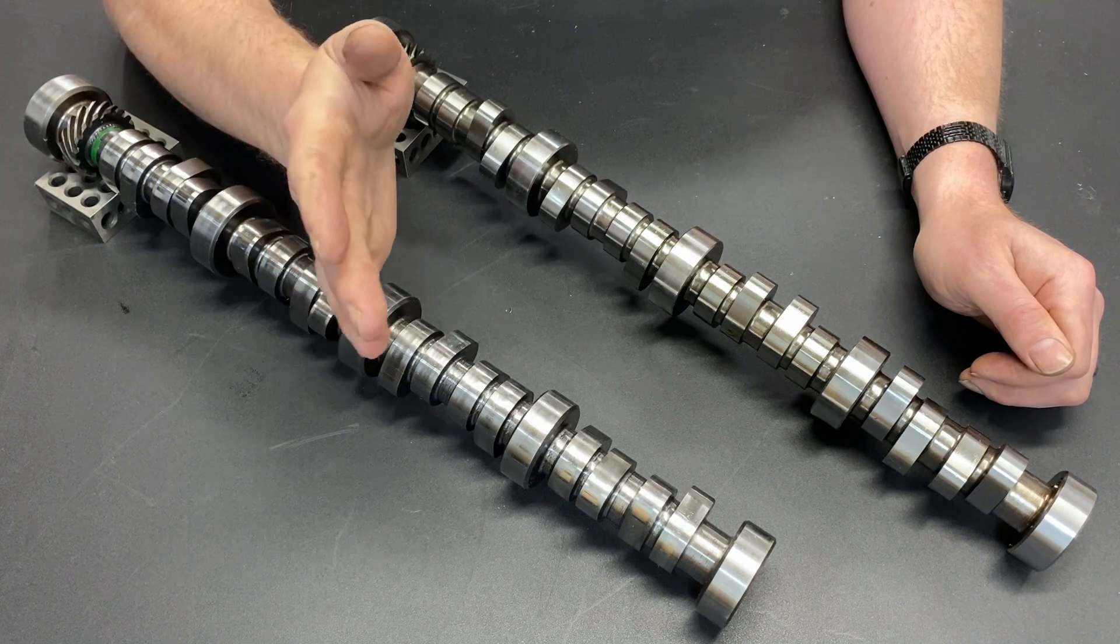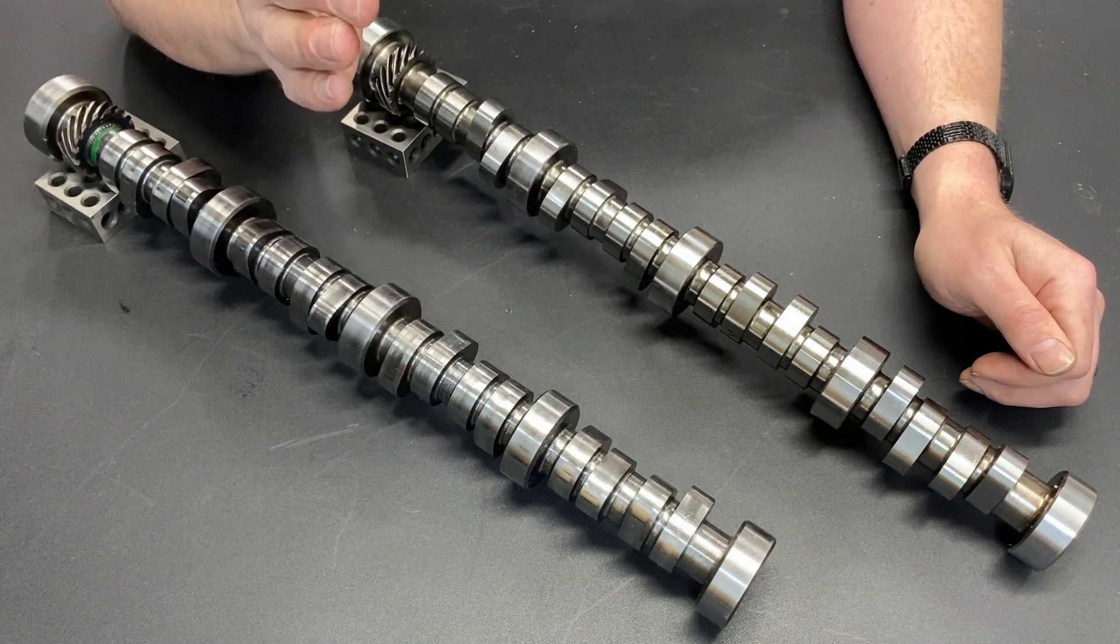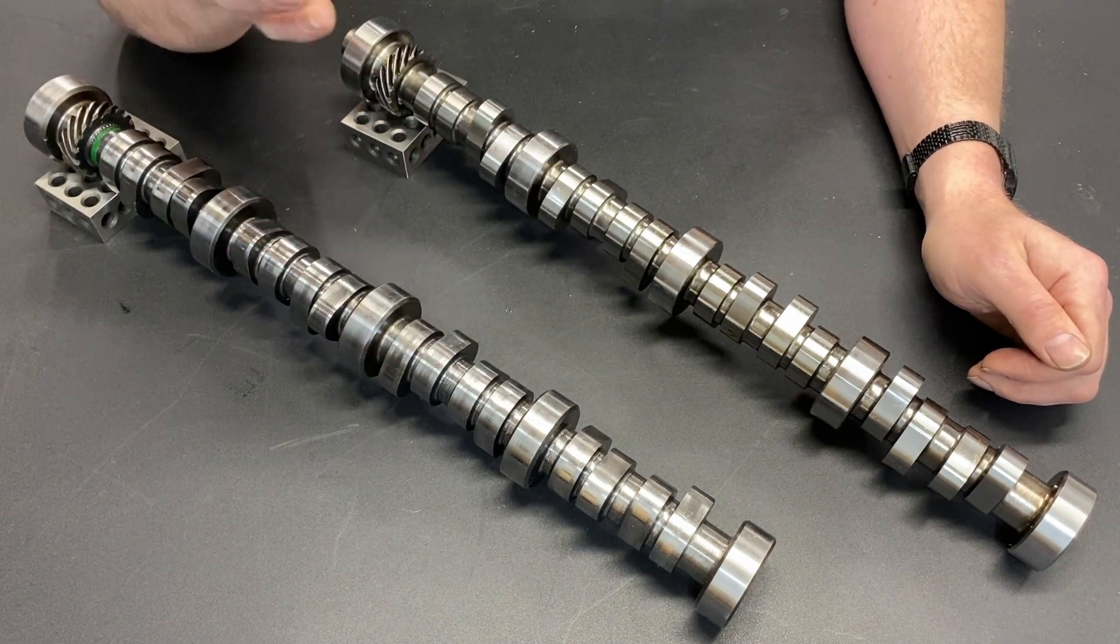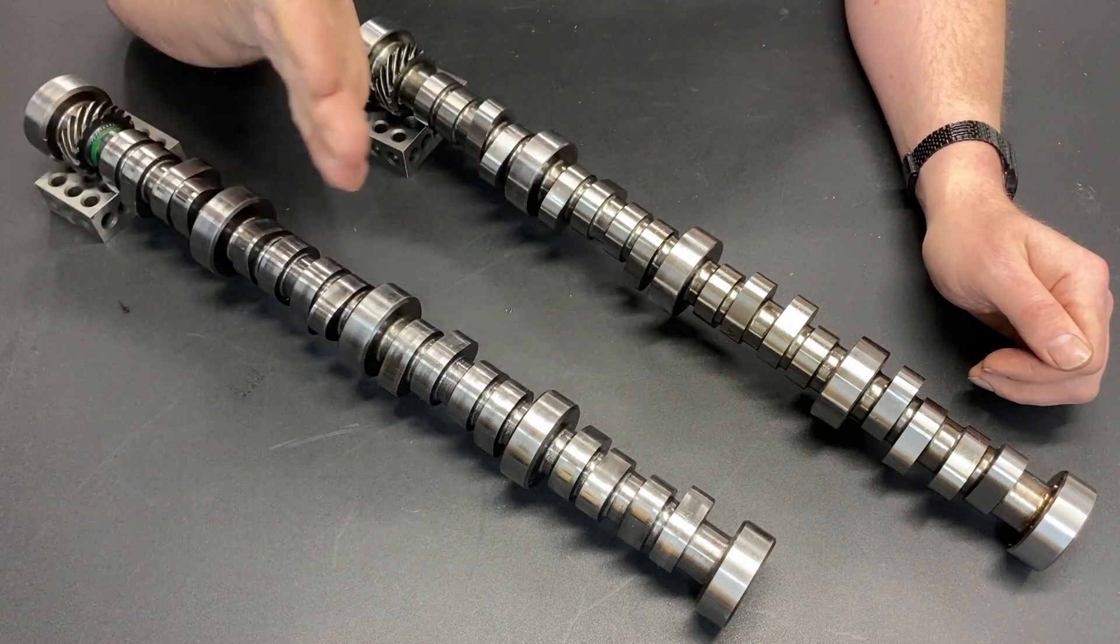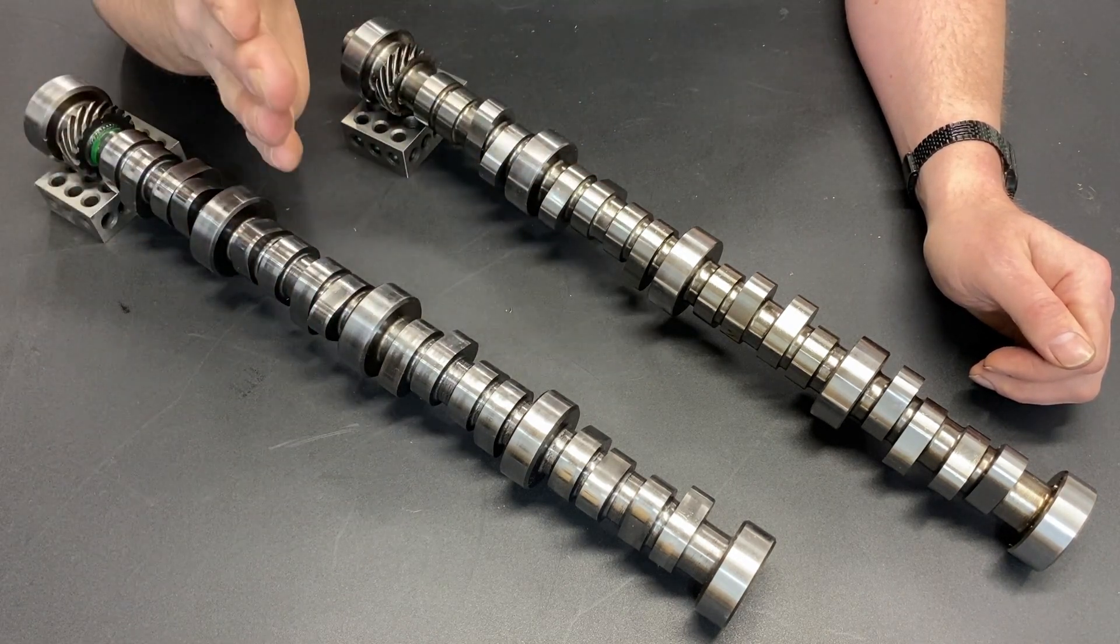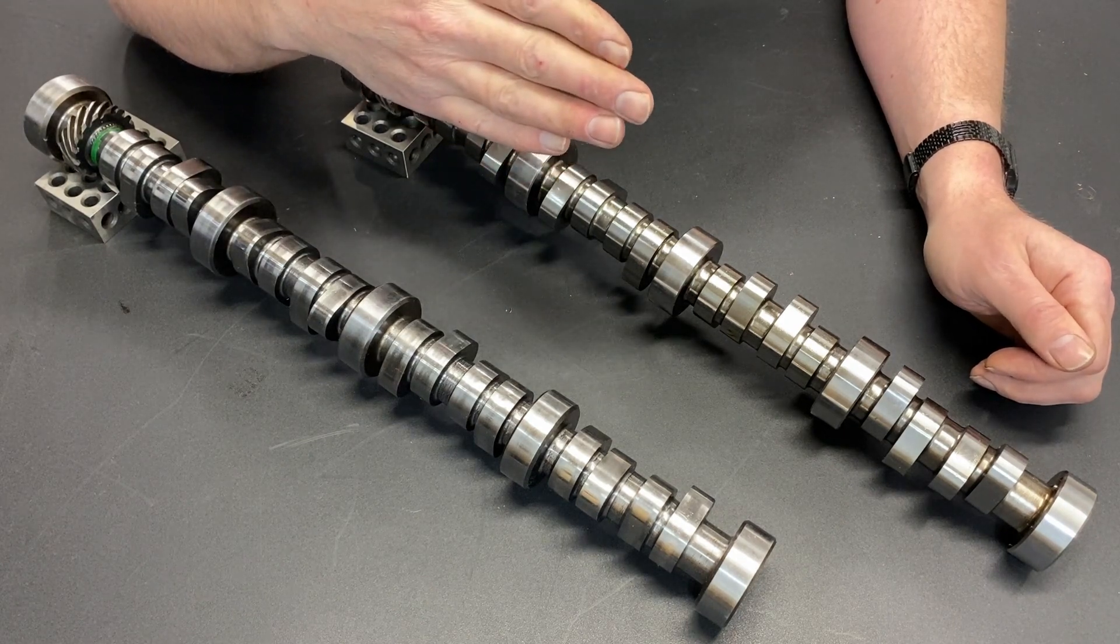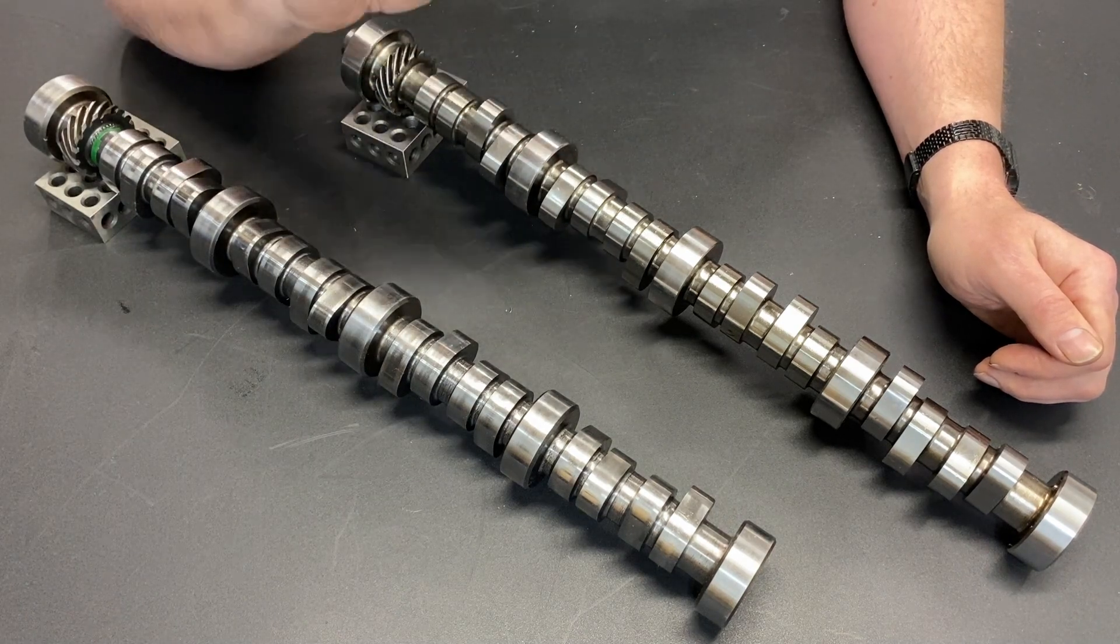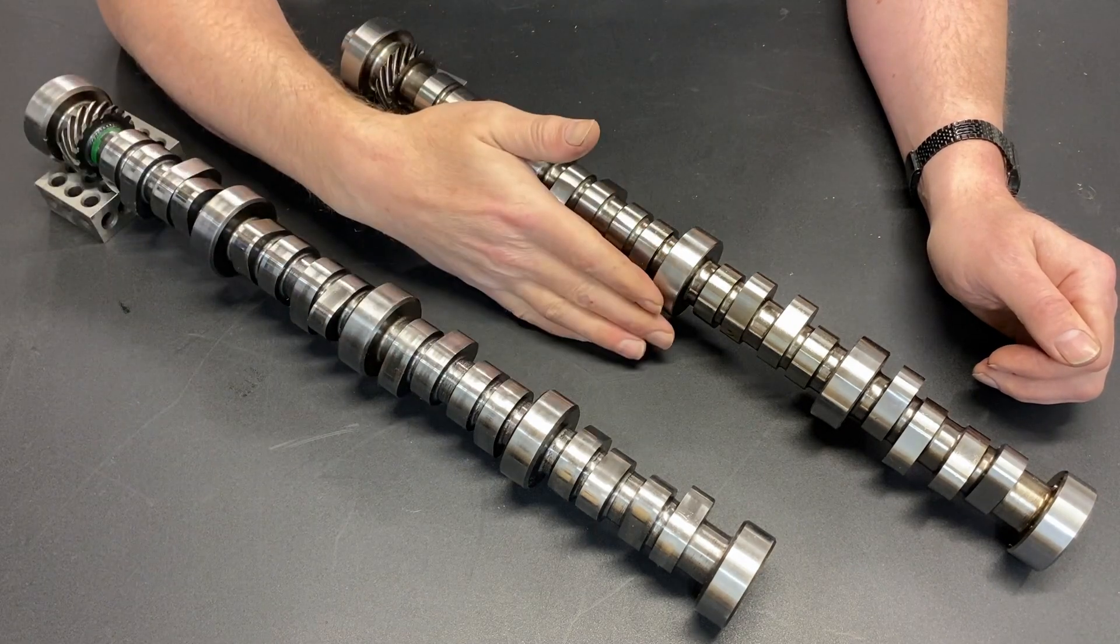So here's the basics of a camshaft. You have three specs. You have lift. You have duration, so that's how long the valve is open. Keep in mind that it's not open at max during that entire rotation. That's why you get oftentimes duration at 50 thousandths lift. So it's how long it's going to be open once it's open at least 50 thousandths. And the third spec is lobe separation angle.